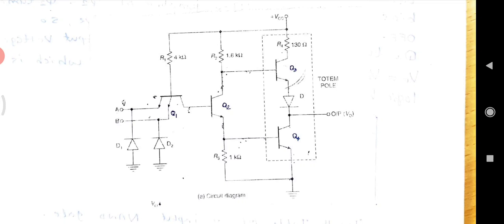For Q3 to be on, its base emitter junction must be forward biased. When Q4 is on, D has to be on for Q3 to be on simultaneously.